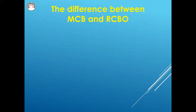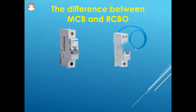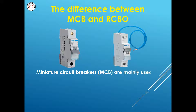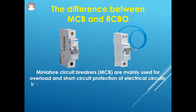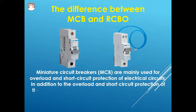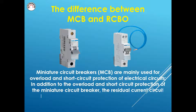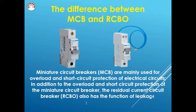The difference between MCB and RCBO: Miniature Circuit Breakers are mainly used for overload and short circuit protection of electrical circuits. In addition to overload and short circuit protection, the Residual Current Circuit Breaker also has the function of leakage protection.